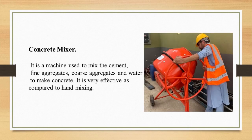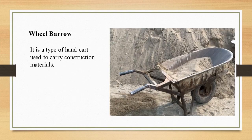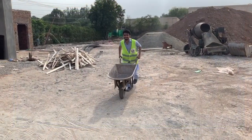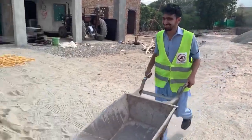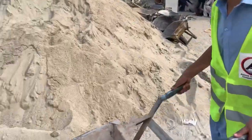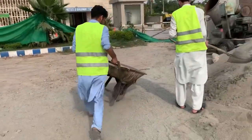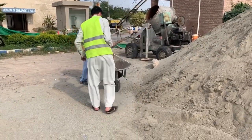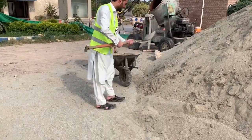The concrete mixer is a machine used to mix cement, fine aggregate, coarse aggregate, and water to make concrete. It is more effective than hand mixing and is also present in the lab. The wheelbarrow is a type of hand cart used to carry construction materials. In this video, one of our colleagues is carrying the wheelbarrow to be filled with sand for construction purposes.